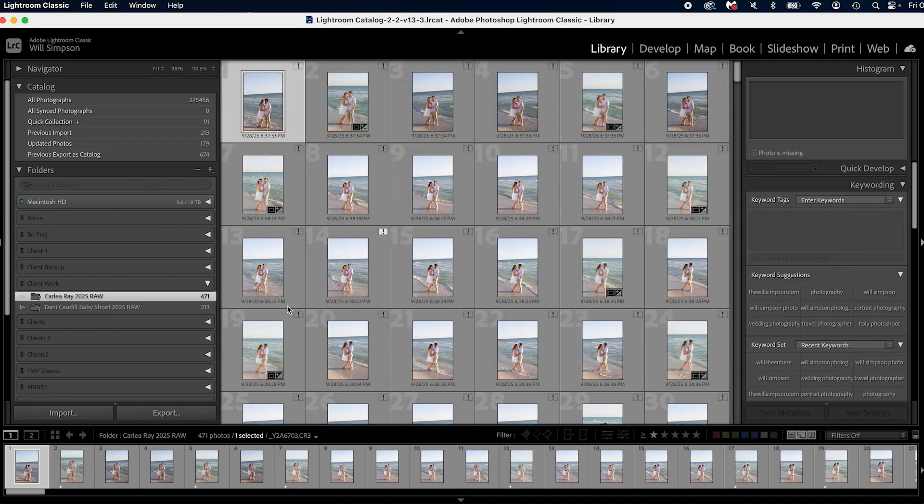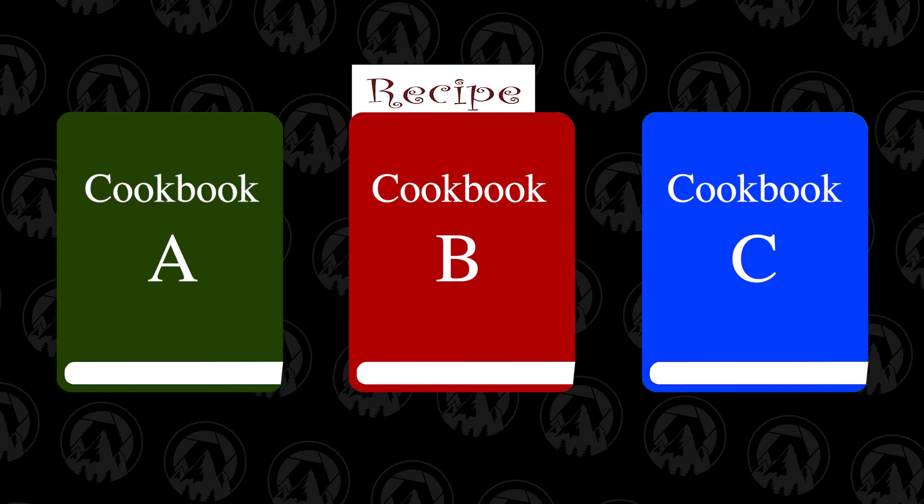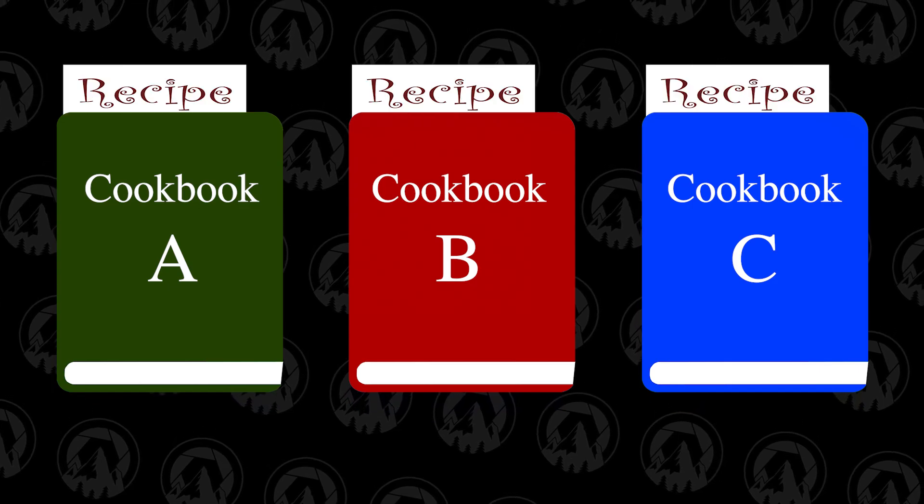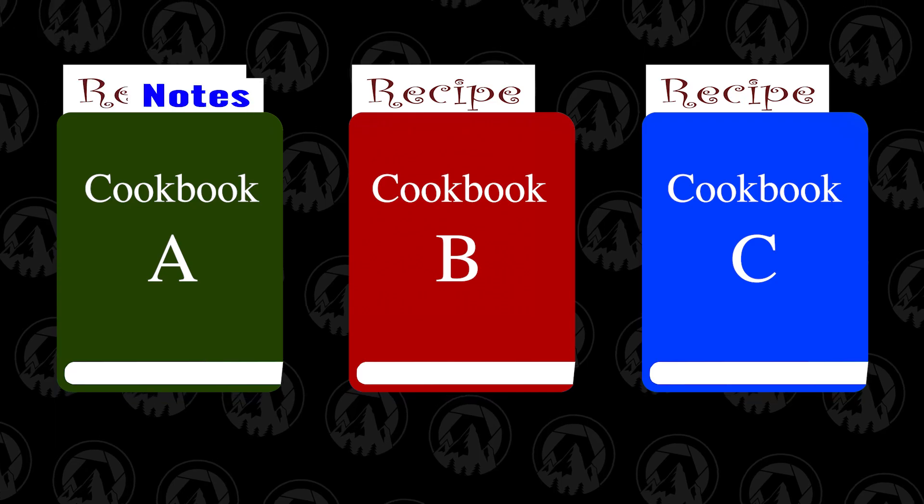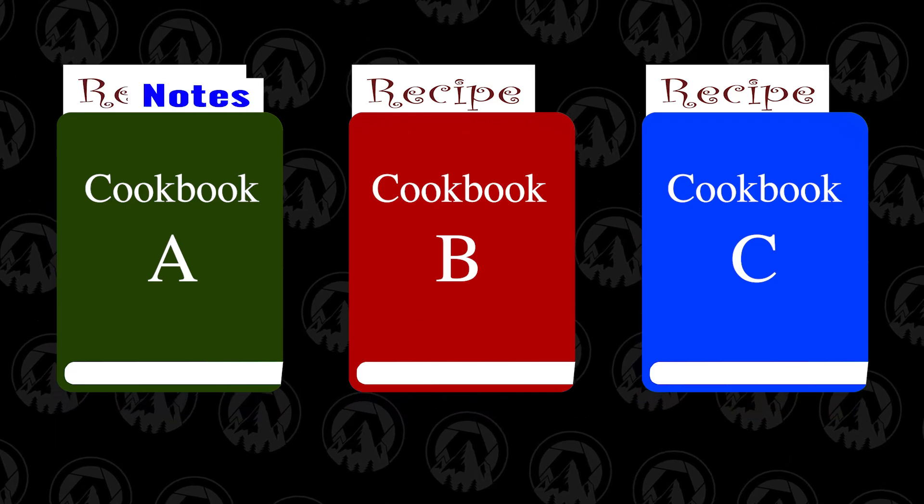I'm going to call this catalog 'Catalog Video Example' and press Create. Lightroom is going to close your current catalog, shut down, and reopen with a new one. This is where catalogs become a little confusing: every catalog is a separate cookbook. If you have three cookbooks, a note in cookbook A won't be in cookbook B or C. Same with catalogs — any adjustments, crops, or customizations won't transfer between catalogs.